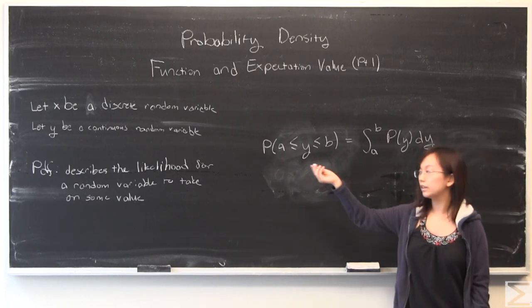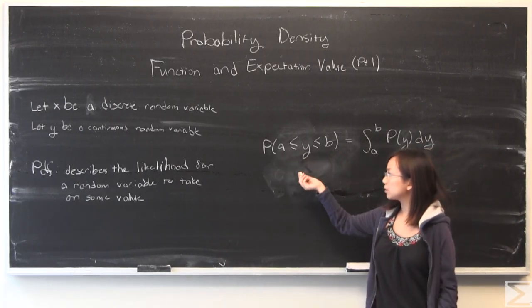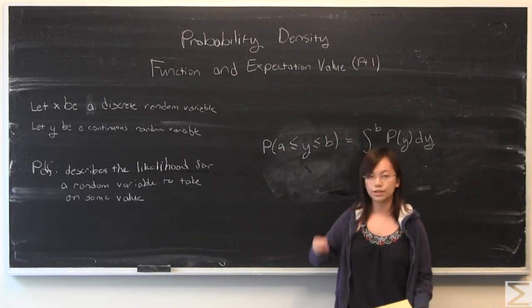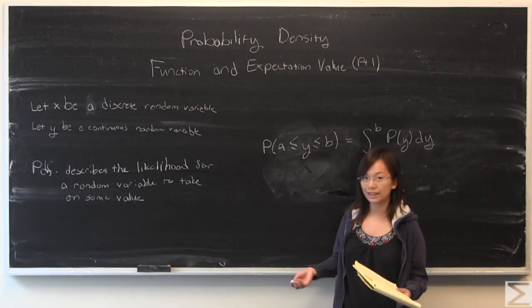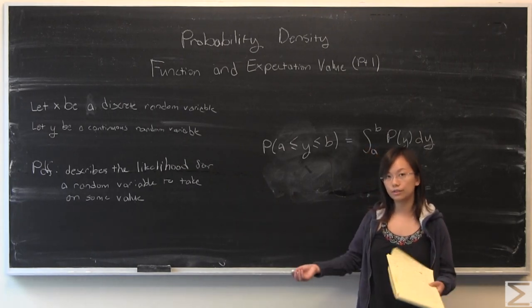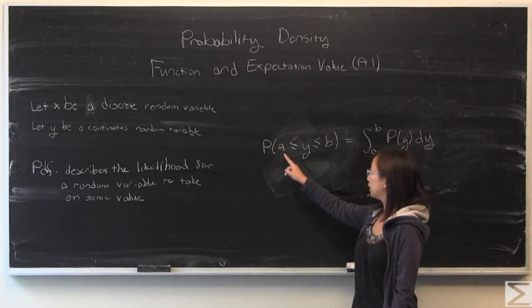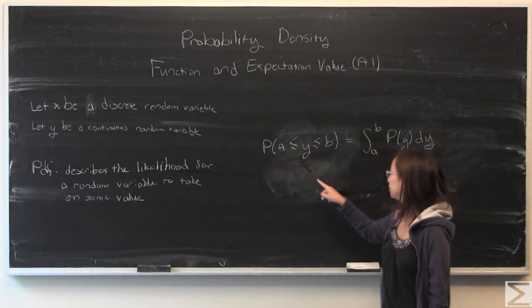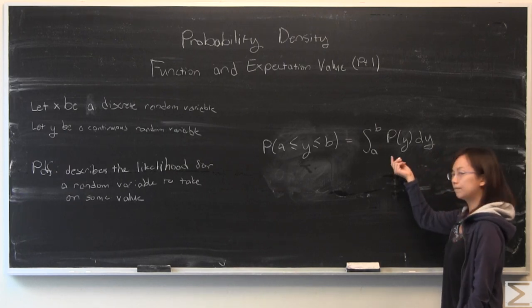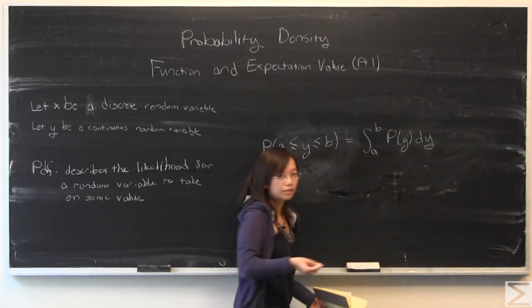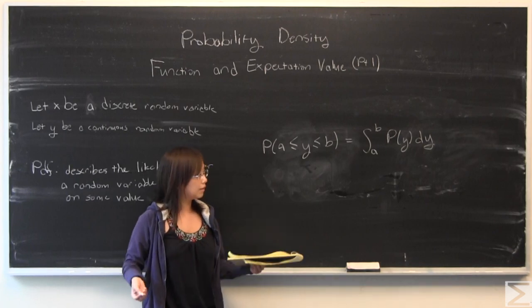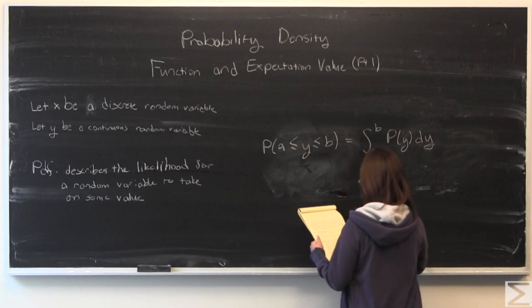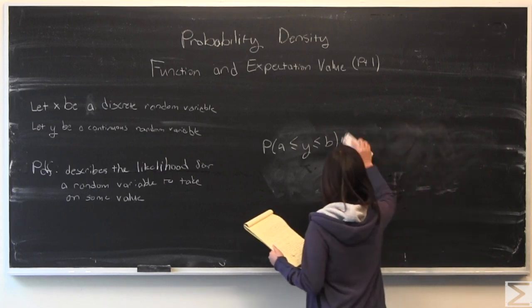If you want to find the probability of finding the random continuous variable in some range, for our earlier example with rain, if you want to find the probability that it rains between one and three inches, you would say probability of finding y, how much it's raining, between one and three, you would plug it into this integral, use your PDF which should be given to you. And that will give you the probability of finding that value of y between one and three. That's a very important thing you can do with the PDF.